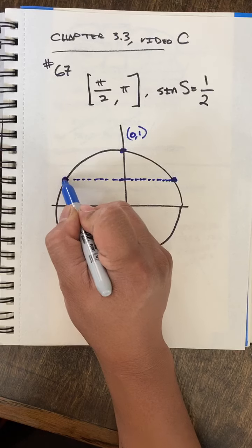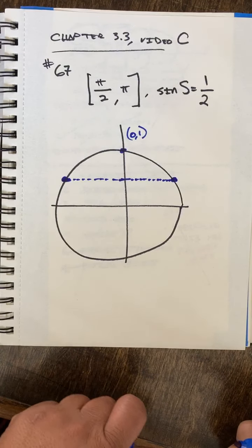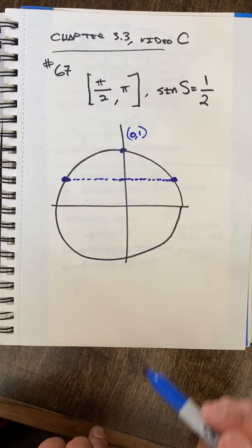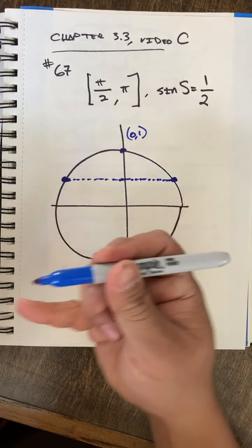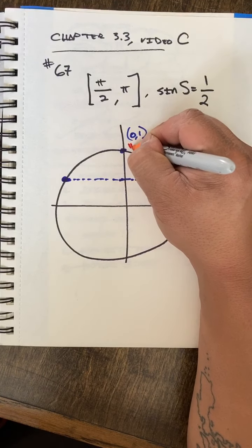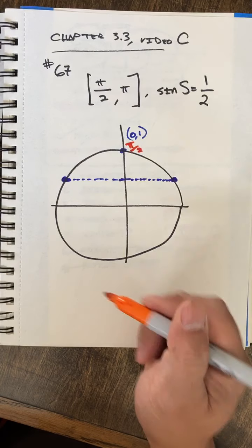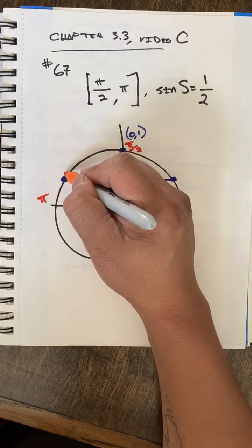here and here. Okay, now it looks like there's two answers there, but my domain is restricted to pi over two and pi. And those angles are here, pi over two, and here pi. And so I'm really interested